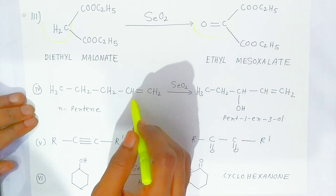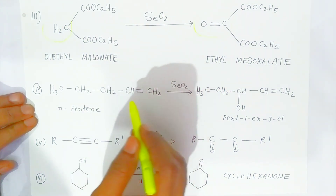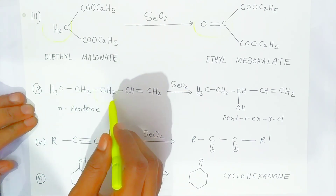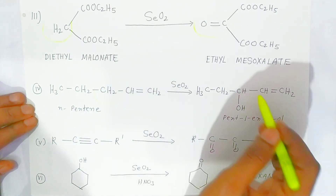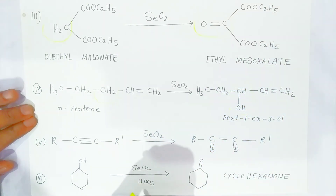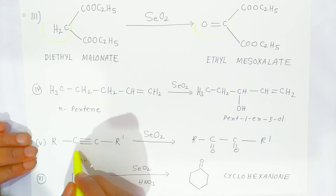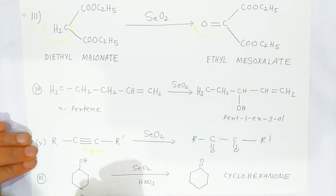For n-pentene, the methylene group adjacent to the double bond is converted into an alcoholic group. Also, ethyne is converted into a ketone group — the alcoholic group is converted into a ketone, that is cyclohexanone. These are very important reactions.